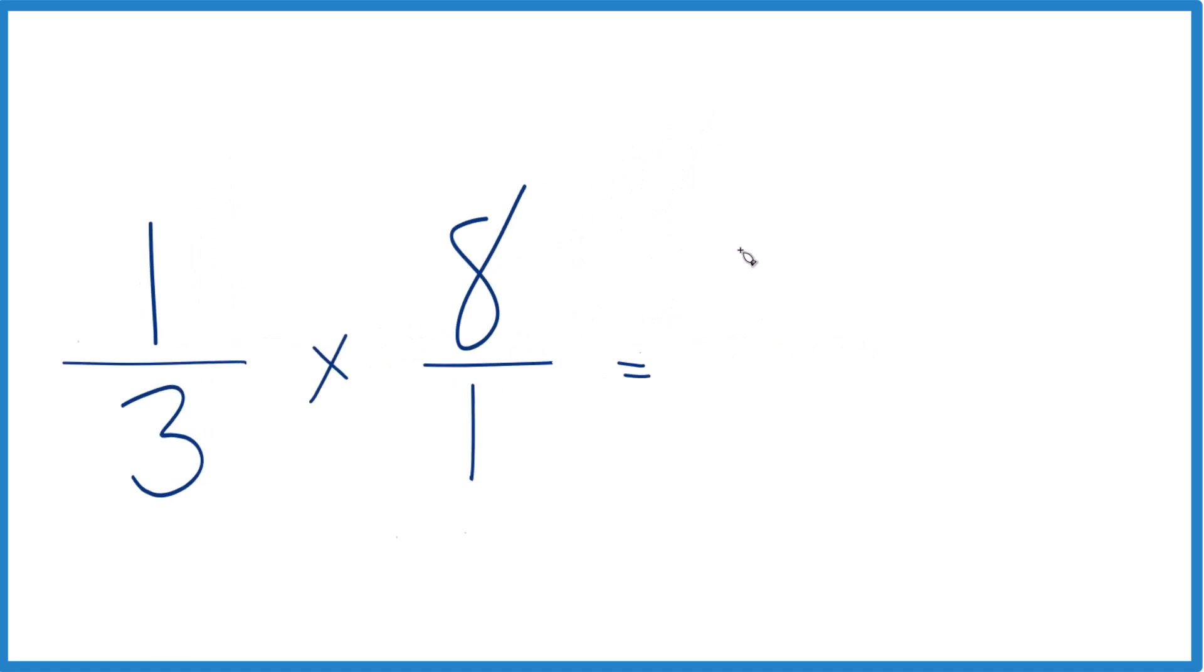You multiply the numerators, one times eight is eight, and then the denominators, three times one is three, and that's it. One-third times eight, or one-third of eight, that's eight-thirds.